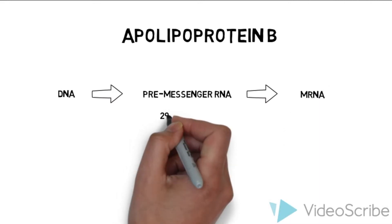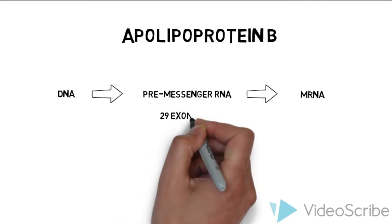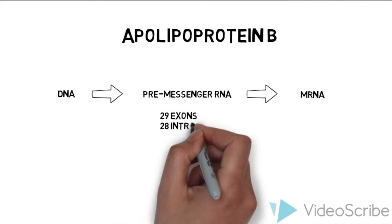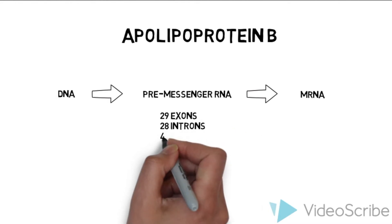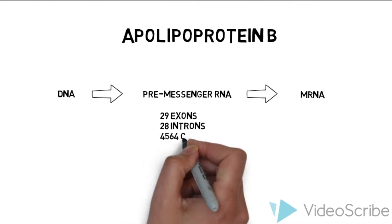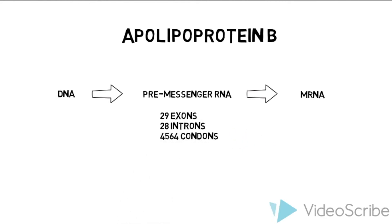That pre-mRNA contains 29 exons separated by 28 introns, with a total of 4,564 codons. To refresh your memory, exons are the part of the sequence that are spliced together during pre-mRNA processing, and introns are the sequences that get removed.